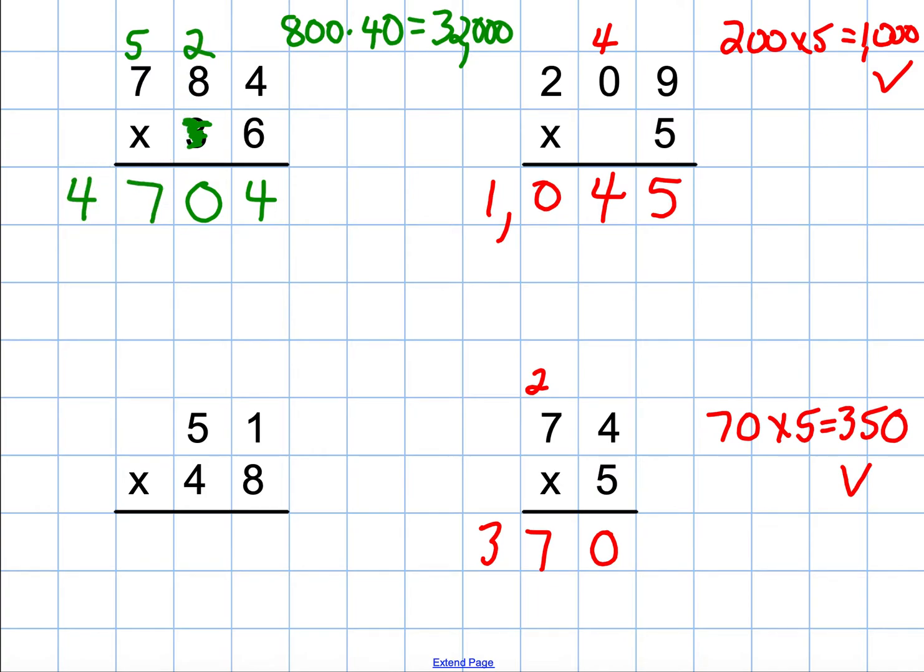Now the next thing I can do is I can uncover my 3, because I do need to multiply my 3, but it's really 30. So what I have to remember for myself is I'm going to place a 0 here. Anything times 30 will end in a 0. I also like to cross off my regrouping so I don't accidentally use them again.